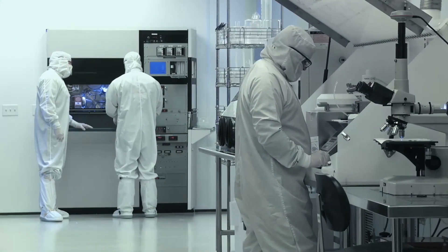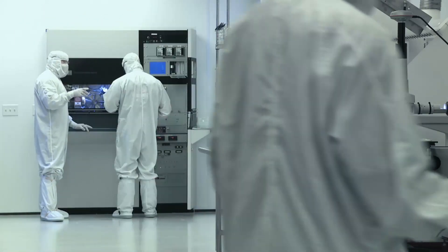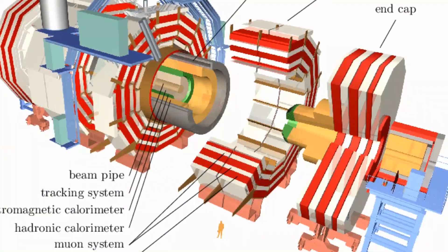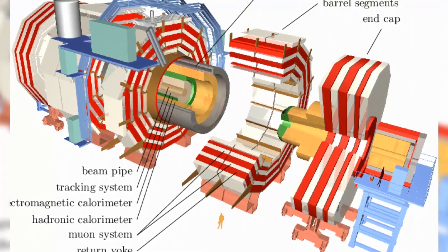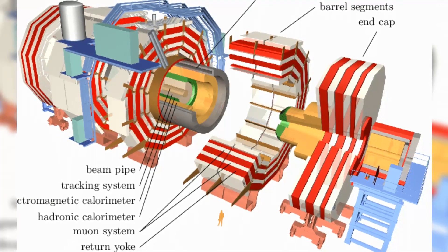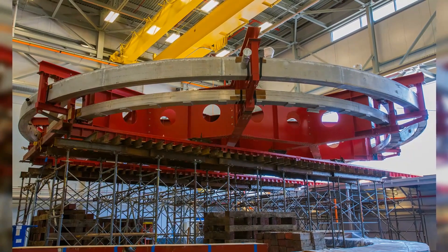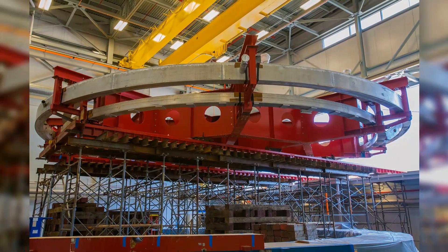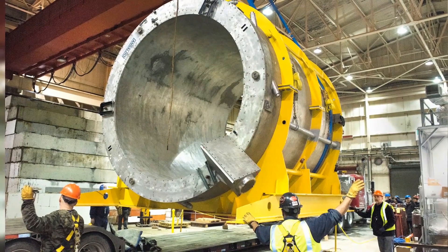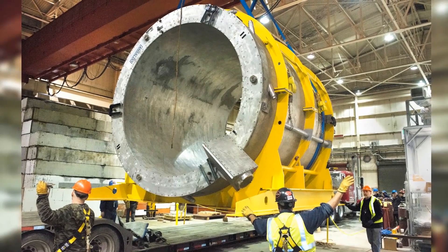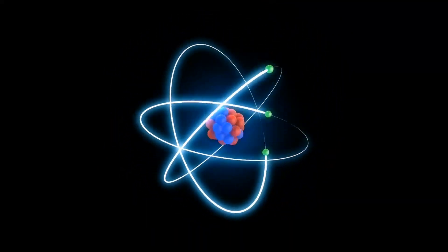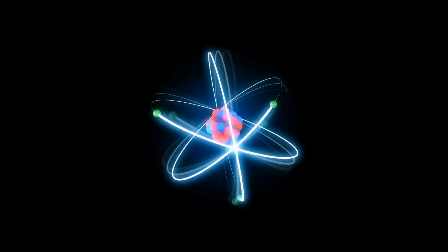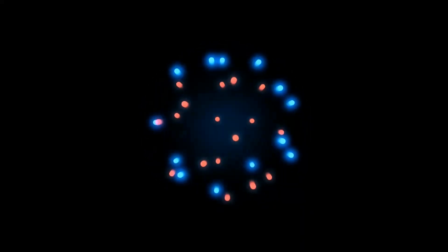Two of the four collision points around the circumference of the LHC are occupied by large general-purpose detectors. These include the compact muon solenoid, which can be thought of as a giant 3D camera, snapping images of particles up to 40 million times per second. The paths of the particles inside the detector are controlled by a gigantic electromagnet called a solenoid. Despite weighing 12,500 metric tons, it's quite compact, as the detector's name suggests. That middle word, muon, refers to an elusive particle similar to the electron, but much more massive, which requires its own array of sub-detectors wrapped around the solenoid.